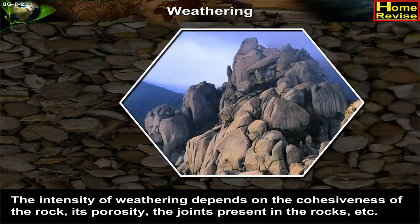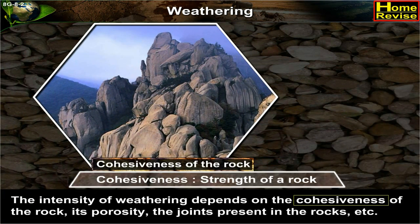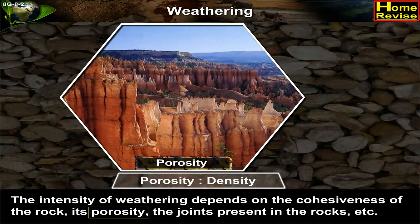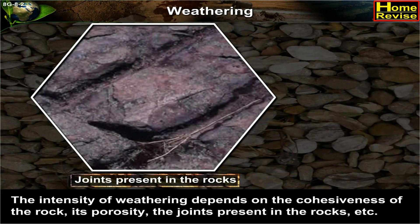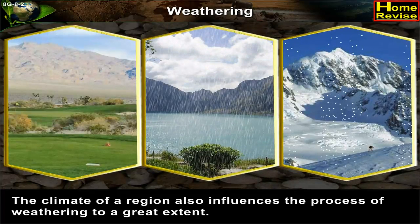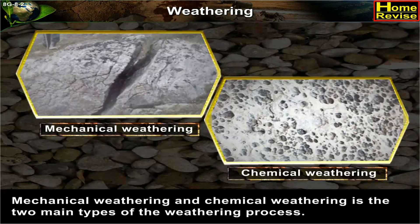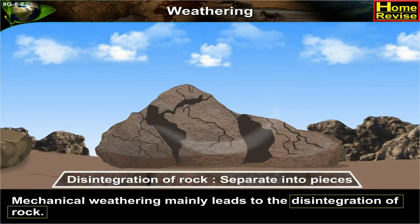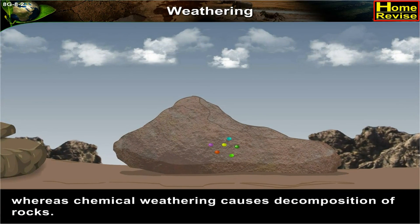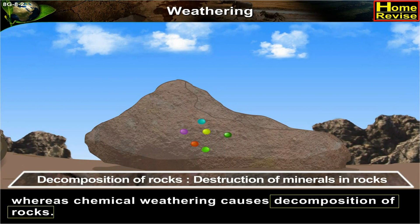Weathering also depends on the properties of rocks. The intensity of weathering depends on the cohesiveness of the rock, that is the strength of a rock, its porosity, that is density, the joints present in the rocks, etc. The climate of a region also influences the process of weathering to a great extent. Mechanical weathering and chemical weathering are the two main types. Mechanical weathering mainly leads to the disintegration of rock — that is, separation into pieces — whereas chemical weathering causes decomposition of rocks, that is, destruction of minerals in rocks.